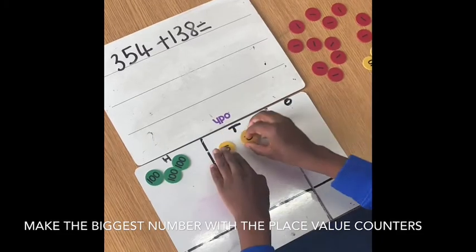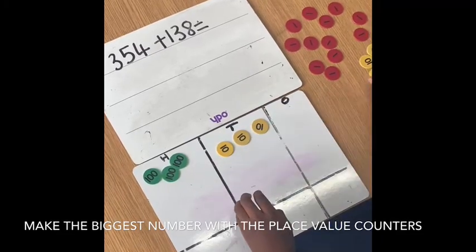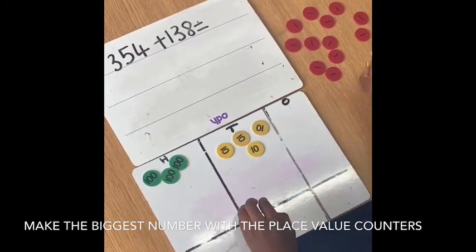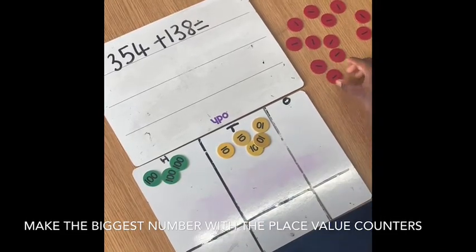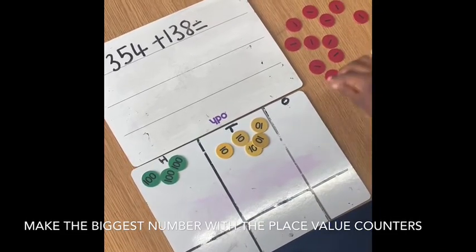10, 20, 30, 40, 50, and 4 ones: 1, 2, 3, 4.